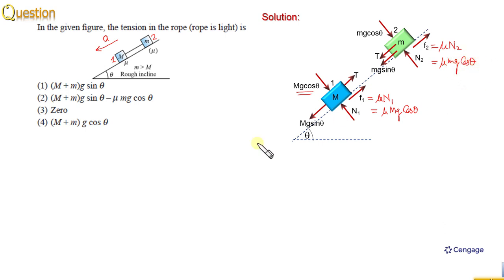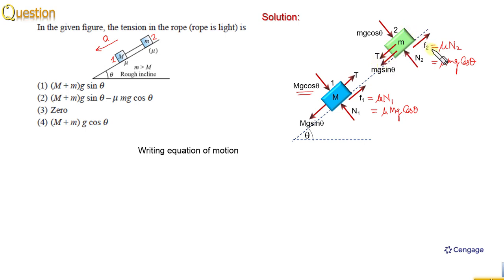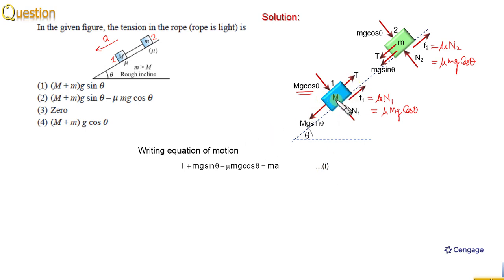Now we can write the equations of motion. For block number two, the equation of motion is: T + mg sinθ − μmg cosθ = ma (equation 1). Similarly, for block number one, the equation of motion is: Mg sinθ − T − μMg cosθ = Ma (equation 2).